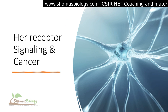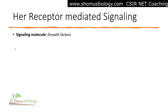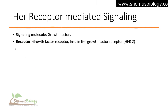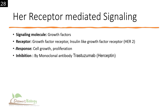The signaling molecules used in HER receptor-mediated signaling are growth factors — epidermal growth factor, fibroblast growth factors, and insulin-like growth factors. The receptors are insulin-like growth factor receptors. One human growth factor receptor is known as HER2. The response is mediated for cell growth, proliferation, and division. Inhibition can also be achieved by the monoclonal antibody known as herceptin.